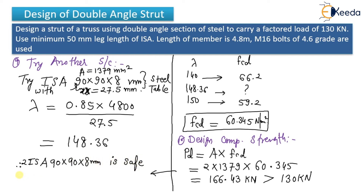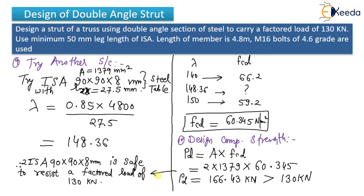This concludes the second numerical on design of a double angle strut. If the design compressive strength is greater than the factored load, the section is safe and no further steps are needed. Thank you.